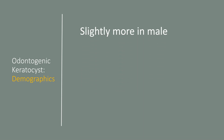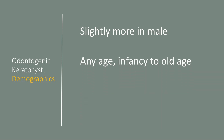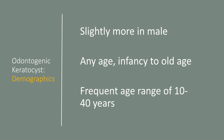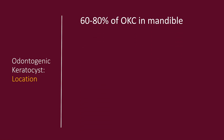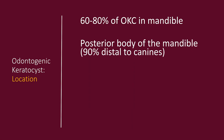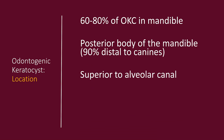What are the demographics of an odontogenic keratocyst? It's slightly more common in males. It can happen at any age, from infancy to old age, but most cases are seen in the age range of 10 to 40 years. The odontogenic keratocyst is located mostly in the mandible, in the posterior body, mostly distal to the canines. Frequently, these are superior to the alveolar canal.